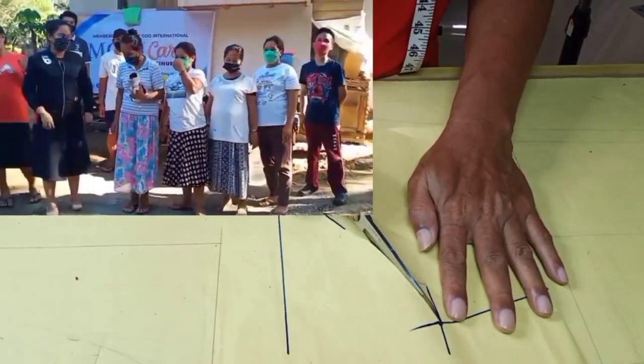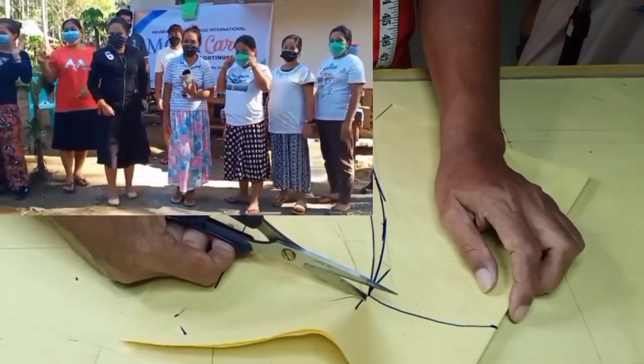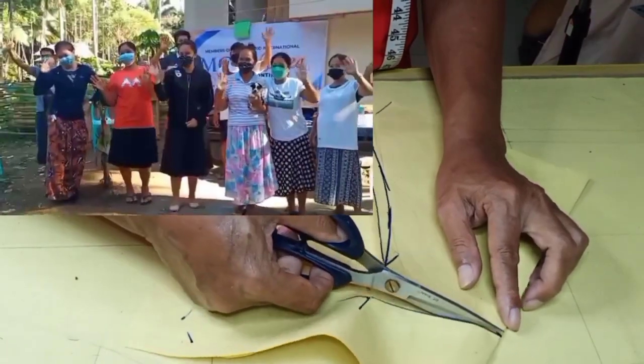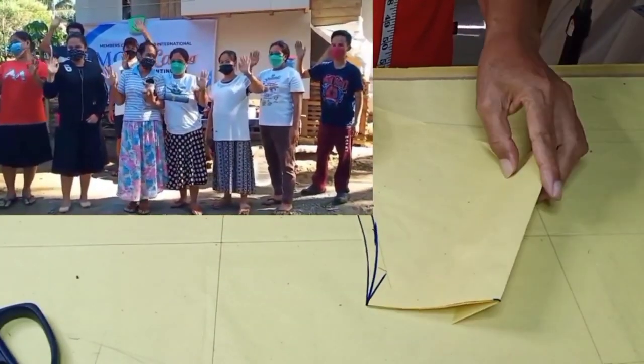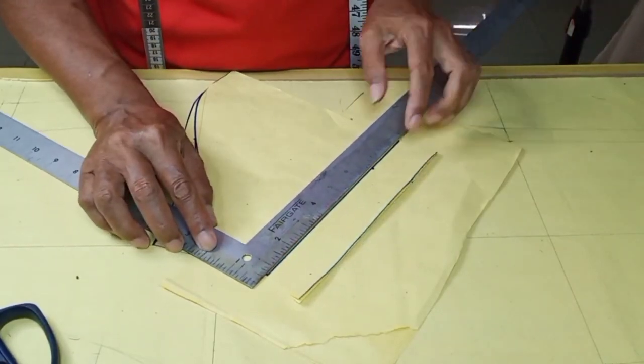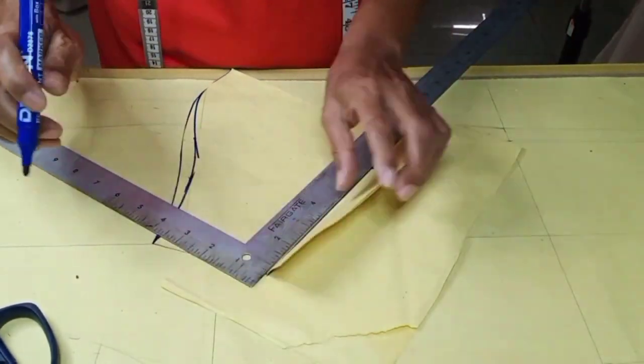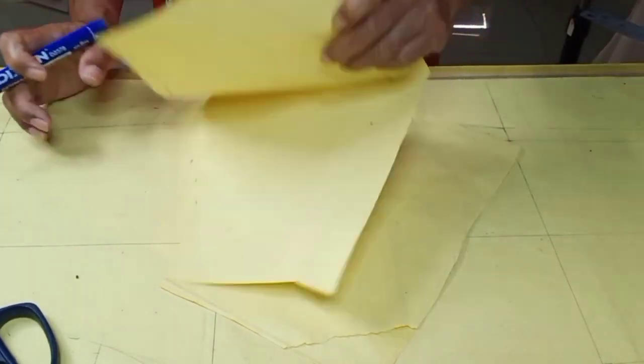Shout out to all Members Church of God International, Lanao del Norte Division, who works hand in hand to build a house to one of our brethren. Let us now duplicate the fold lines to the other side of pattern.